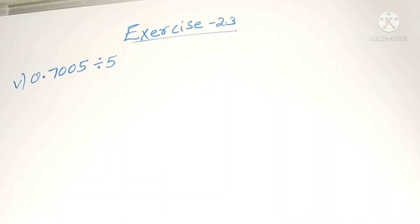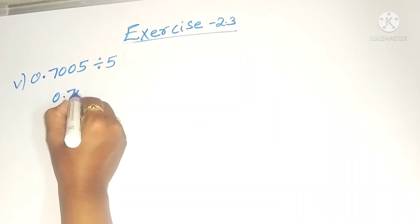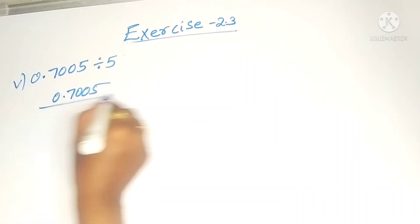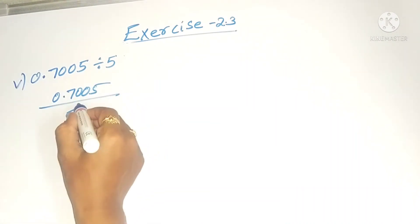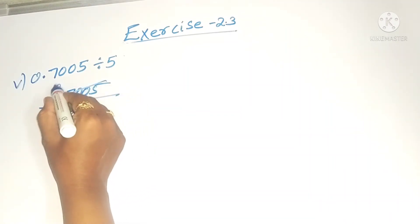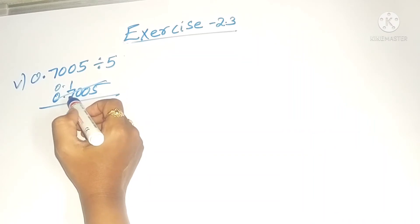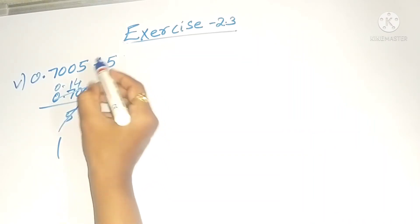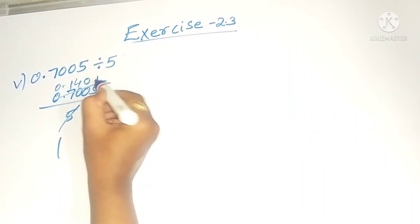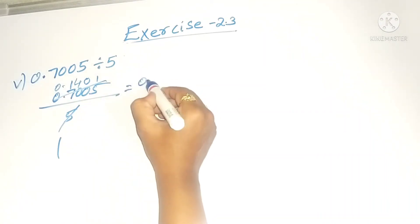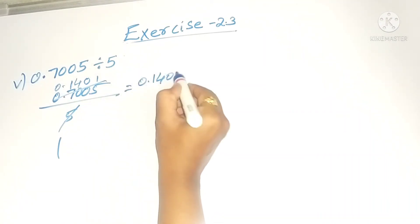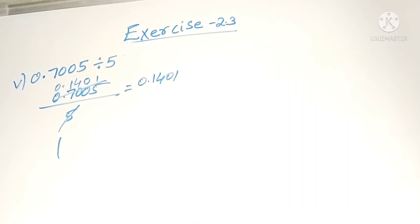The fifth problem: 0.7005 divided by 5. Five ones are five, two will be there. Five fours are twenty, twenty zero: five ones are five. So the answer is 0.1401.